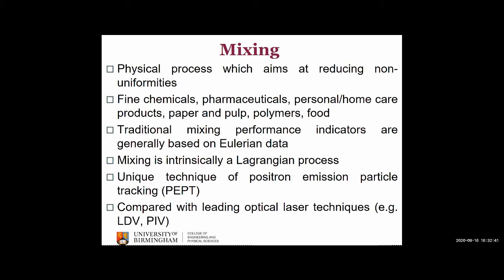Positron emission particle tracking allows non-invasive probing of opaque fluid within opaque apparatus by using a single sub-millimeter positron-emitting particle as a flow tracer. This technique can provide three-dimensional space and time Lagrangian trajectory of the flow. PEPT methods, compared to other measuring methods such as laser Doppler velocimetry (LDV) or particle image velocimetry (PIV), have a lot of advantages, and PEPT can give us a Lagrangian view of our mixing processes.